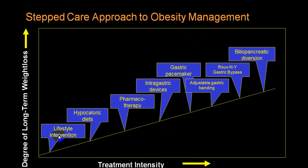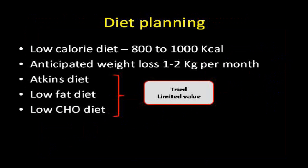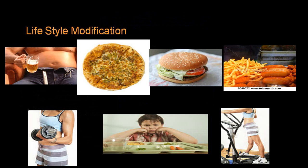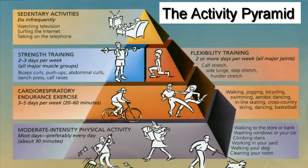Management starts with lifestyle intervention: hypocaloric diet and exercise, then pharmacotherapy. If that fails, consider intragastric devices, gastric pacemaker, or gastric banding, and then surgical intervention like Roux-en-Y bypass, biliopancreatic diversion, and more. Diet should aim for losing 1 to 2 kg per month, with a low-fat, low-carbohydrate, high-fiber diet advised along with good physical activity.